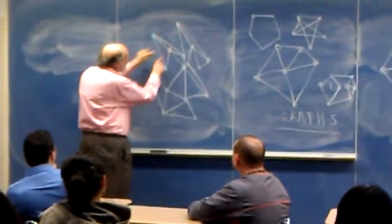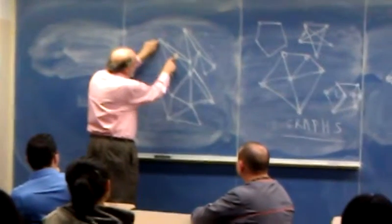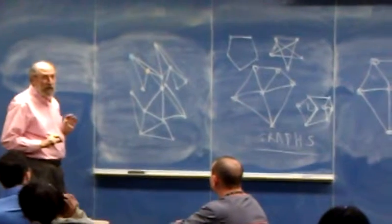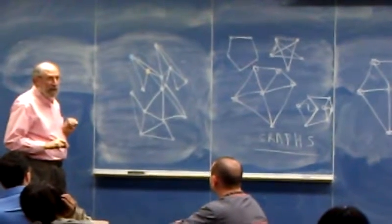And what's the coloring rule? If two vertices are joined by an edge, they have to have different colors.